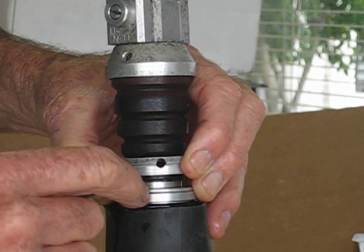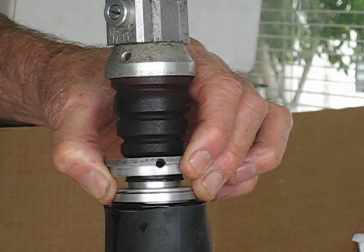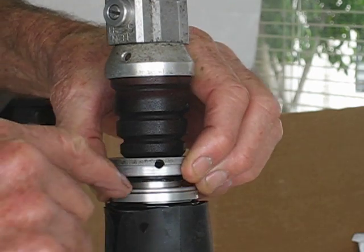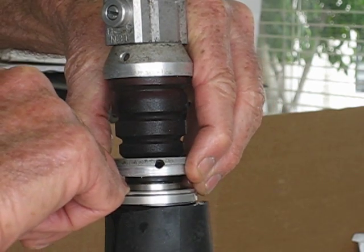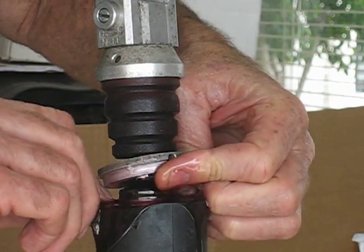Now the oil is almost at the top of the inner tube there. So I'm going to press the seal head down and I'm tilting the shock as well because I want that at the top.